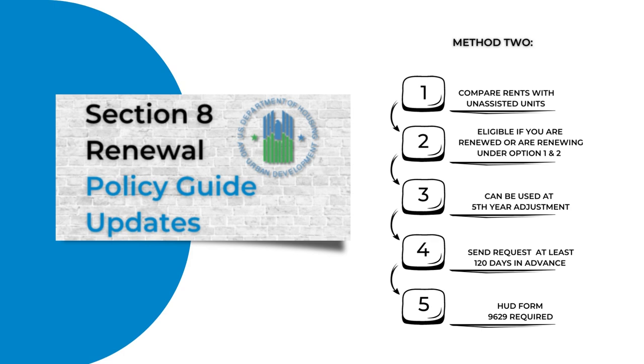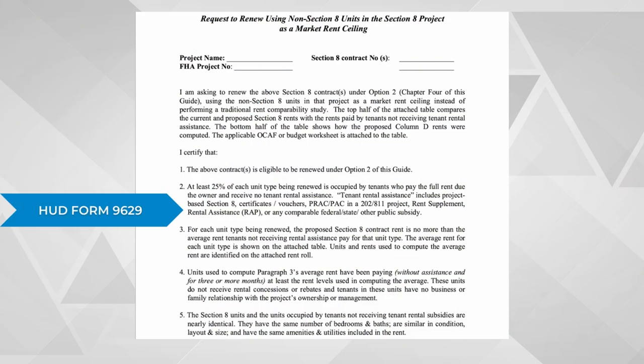The HUD form 9629 must be included in your request. This request is to renew using non-Section 8 units.